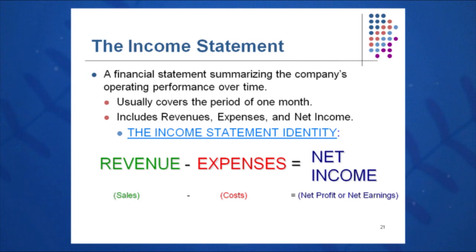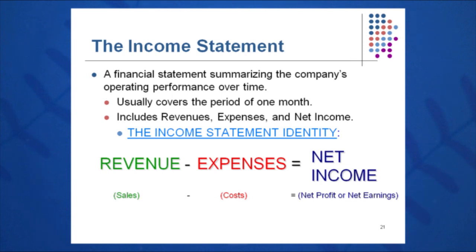Net income has many different terms. Some call it simply profit, some call it earnings — you'll see that word in the Wall Street Journal. I prefer net profit or net earnings to indicate the bottom line. Some companies even call it NPAT — net profit after tax — which is the same thing as net income.